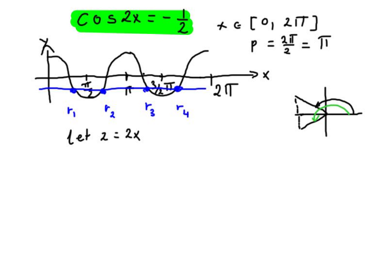So in my equation, cosine 2x, I'll be seeing cosine z is equal to negative 1 over 2. From the special triangle, you may remember, I hope that you do that cosine 1 over 2 is represented by 60 degree angle, or pi over 3.